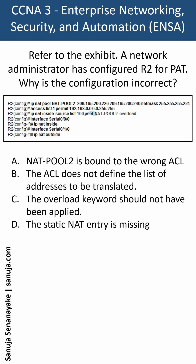On your screen, you have the configuration shown right here. We have R2 configured with IP NAT pool 2 with this IP address and NAT mask, then we have access list 1 permit with this information, and here we have IP NAT inside source list 100 pool NAT-pool 2 overload — that's where the overload is happening — and then we have the interface serials with inside and outside shown here.